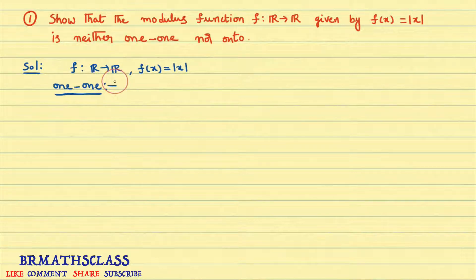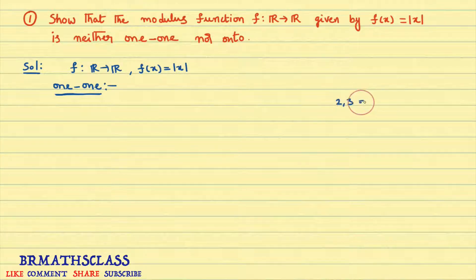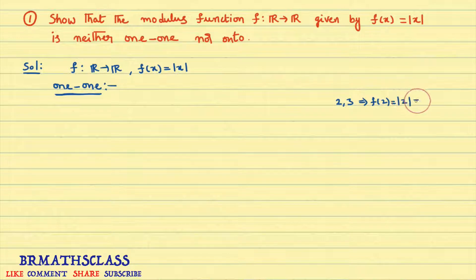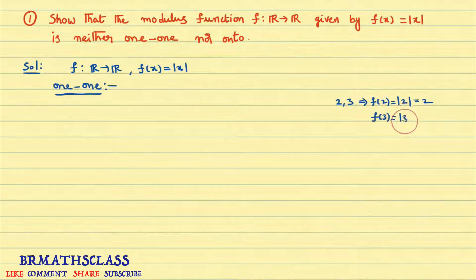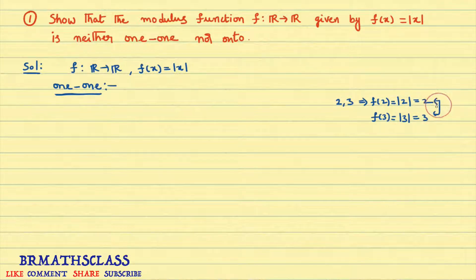Here, I will try to show you a tricky point — please do not get confused. I take different elements, say 2 and 3. What is the image of 2? f(2) is modulus of 2, which is 2. f(3) is modulus of 3, which is 3. Since 2 and 3 are different elements with different images, from this alone we cannot say that this function is a one-one function.